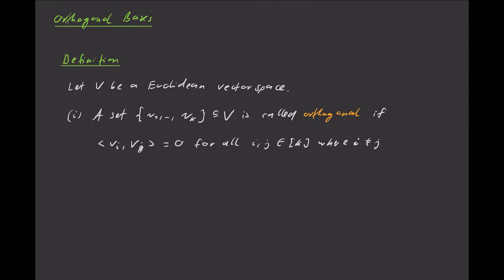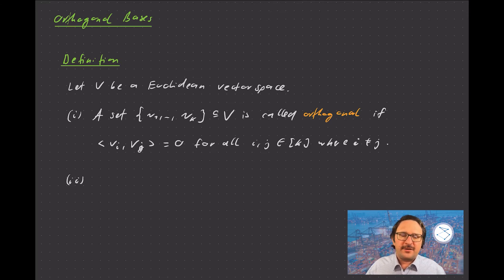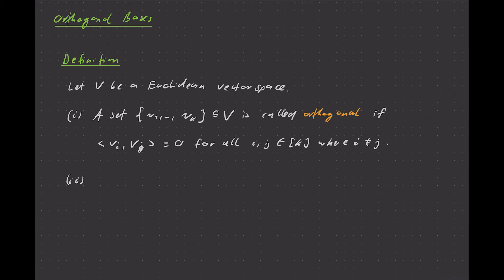So any two distinct vectors are perpendicular — that's an orthogonal set. We can make this notion a little stronger, because for measurement purposes we like to have vectors that have a simple measurement and can be scaled arbitrarily. So what often makes things easier is to have vectors with a defined length of exactly 1, and we call that property normal. Together with orthogonality, we call that orthonormal.